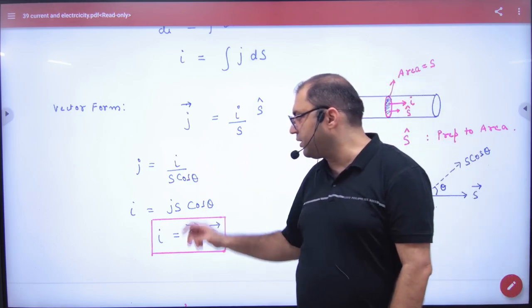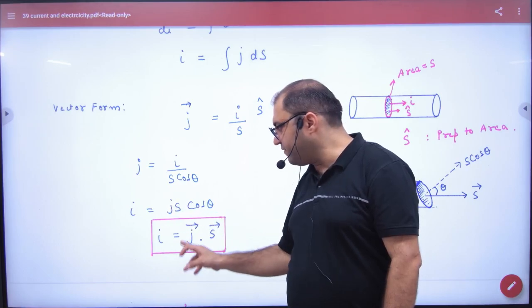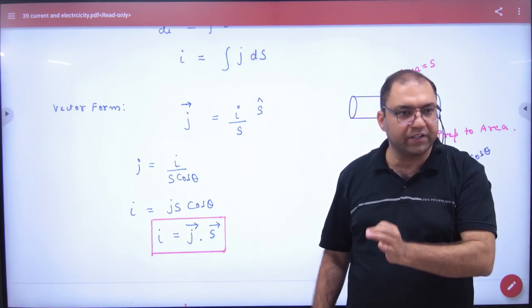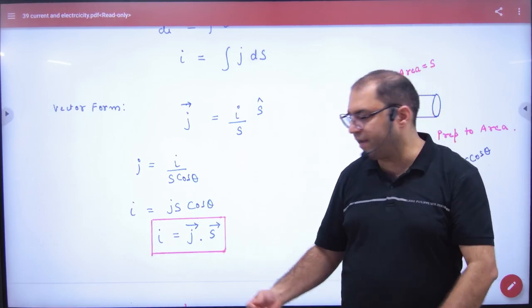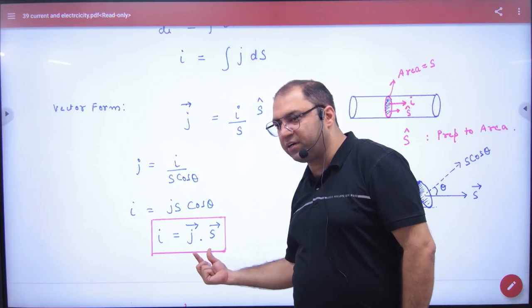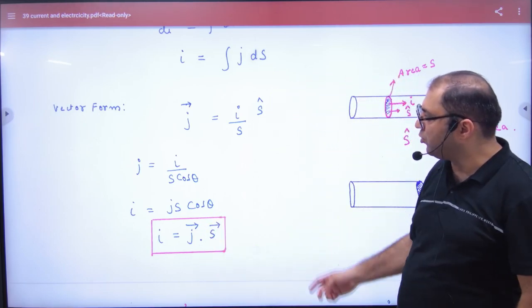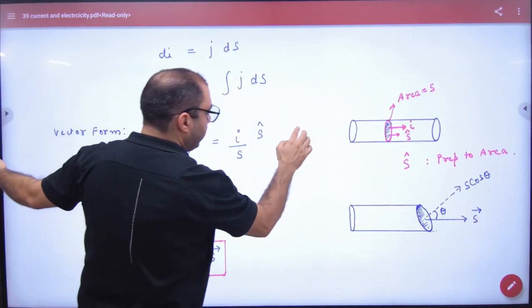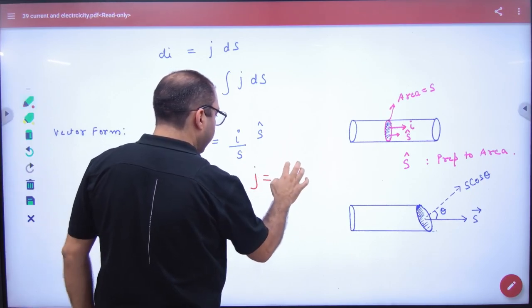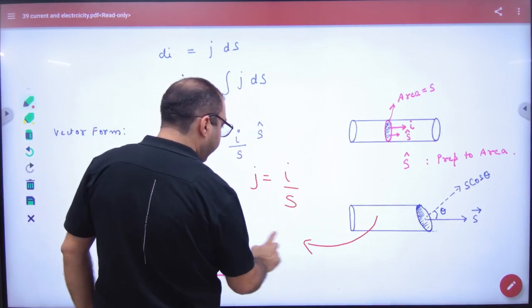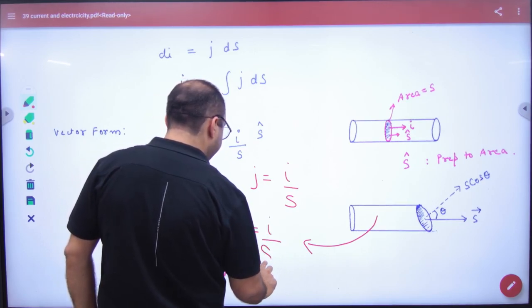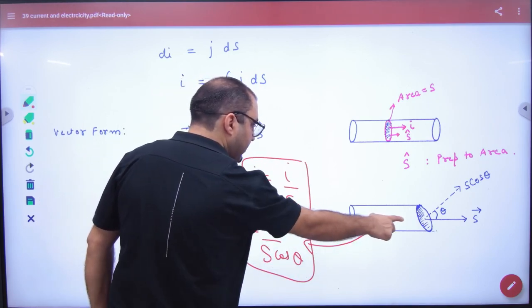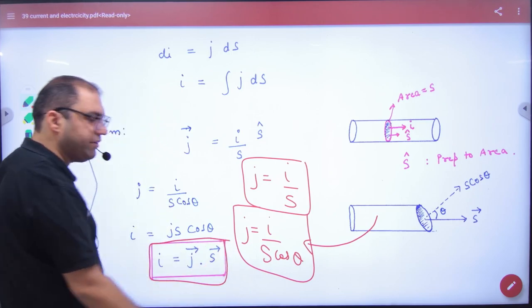Cross multiply karenge to current kya ayega? j S cos theta. J is a vector, S is a vector, to dot product. To ye current ka jo hai, vector representation hai. Current scalar hai, lekin ye dot product hai - j vector dot S vector ka. To aap please ye formula booklet pe note kar lijiye ki: pehla formula ye note kar lijiye ki j hai normally i by s, par agar aapki wire tedhi hai to j kya hoga? i divided by s cos theta - ye pehla formula. Ye dusra formula - diagram banana hai isliye lena ismein. Aur ye tisra formula - bas ye teen formula note karna.